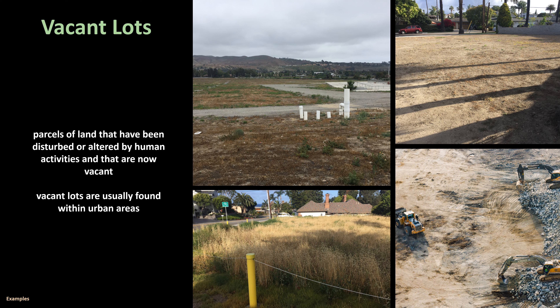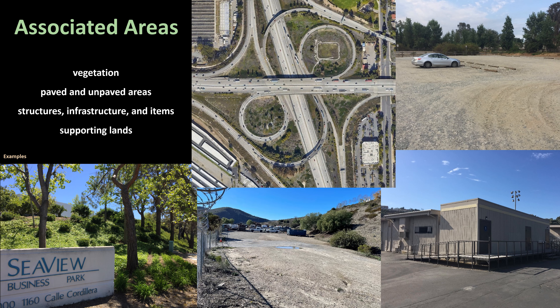Vacant lots. Parcels of land that have been disturbed or altered by human activities and are now vacant would be under the developed lands category, not the undeveloped lands category. Vacant lots are usually found within urban areas. Examples include areas once developed but where structures and pavings have been entirely or partially demolished and removed, vacant lots with vegetation management such as regularly mowed areas, vacant lots with little to no vegetation, vacant lots filled with non-native vegetation, and areas entirely or partially cleared and prepped for future development.